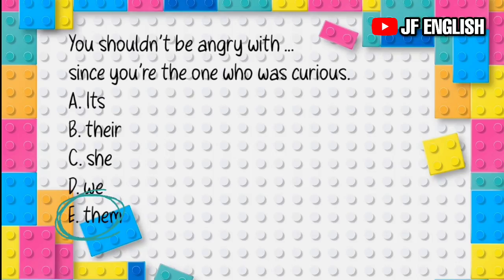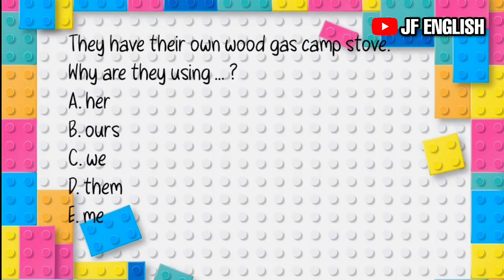Jawabannya adalah 'them.' Pada kalimat tersebut, 'you' merupakan subjek, 'shouldn't be angry' adalah predikat, sedangkan bagian yang kosong adalah objek kalimat. Karena bagian yang kosong merupakan objek kalimat, maka dari semua option yang ada, option A 'them' adalah jawaban yang paling tepat — 'them' merupakan object pronoun.